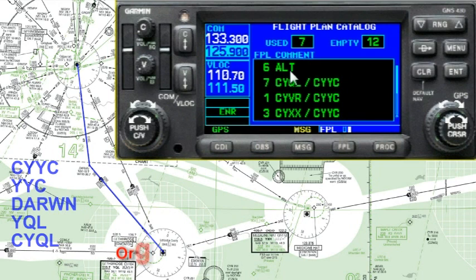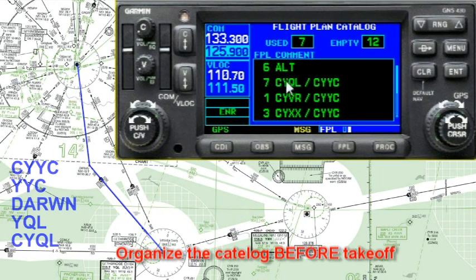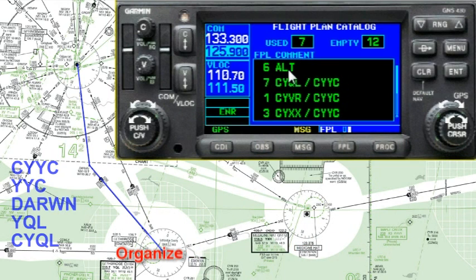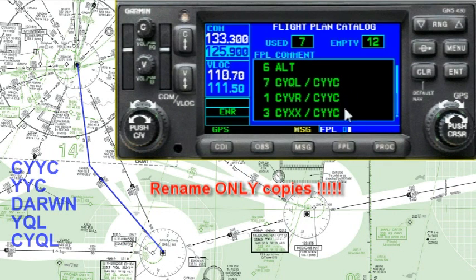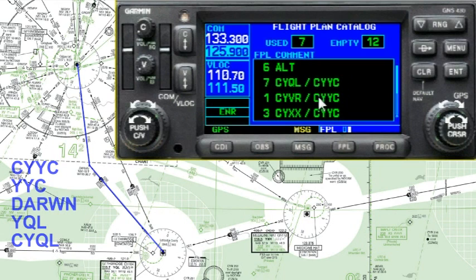Generally speaking, you should have one alternate airport at the top of your catalog. If you come into the catalog and see there's already an ALT in there, delete it. Do not rename any of the existing flight plans in the catalog as ALT — if you start doing that, pretty soon every flight plan will be called ALT. Instead, make a copy and name it ALT.